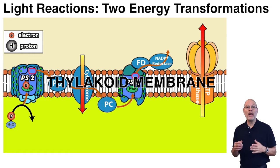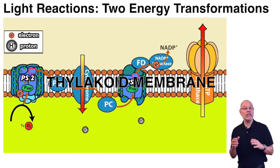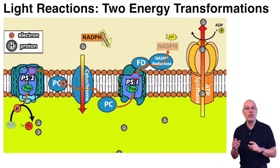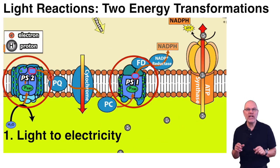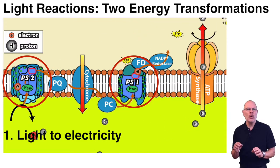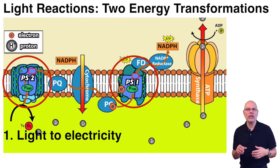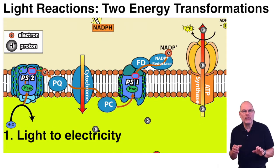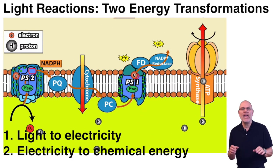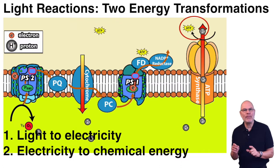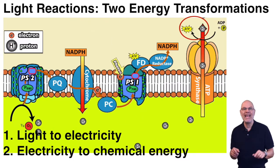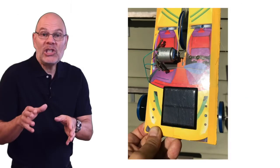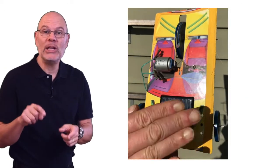The light reactions involve two energy transformations. To see these, we need to look at the membrane of the thylakoids. The first transformation is shown here, where light energy is initiating an electrical current — those little E's are electrons flowing along a pathway called an electron transport chain. The second transformation takes electricity and transforms it into chemical energy, as ATP is made and NADP+ is reduced to NADPH.